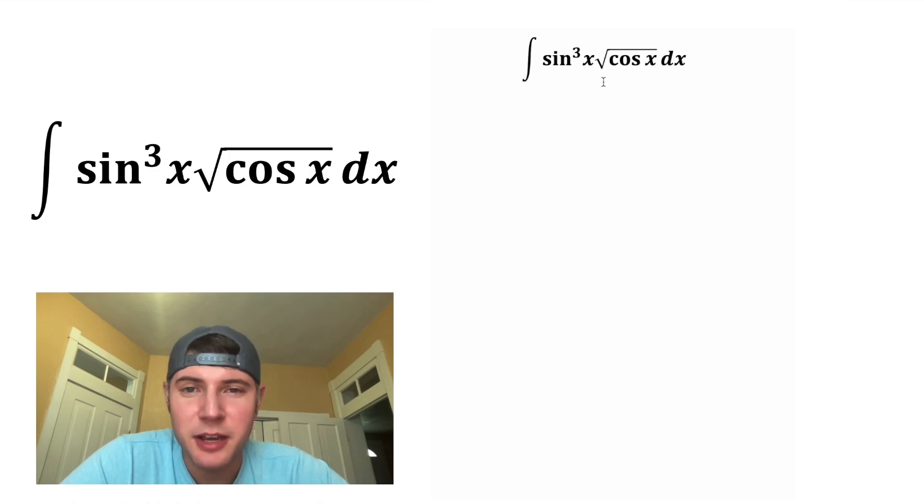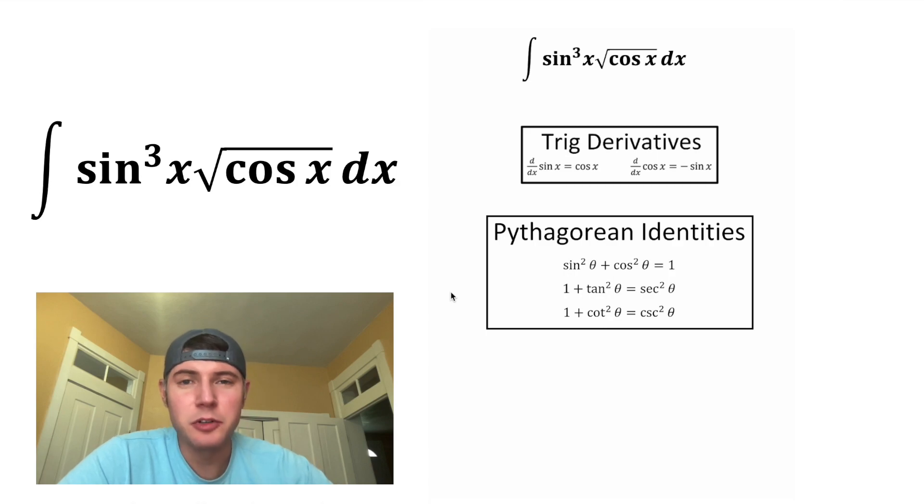It's the integral of sine cubed x times the square root of cosine x dx. These are the notes we're going to end up using, and if you want to try it on your own, pause it, because I'm going to solve it in three, two, one.